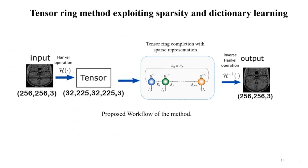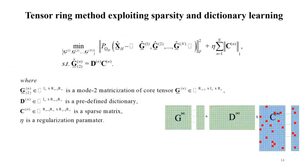In summary, for the tensor ring method exploiting sparsity: we take an input tensor with some parts missing, hankelization folds it into a higher-order tensor, then we perform tensor ring completion with sparse representation where the core tensors are initialized with a tensor ring decomposition. These core tensors are then updated using a dictionary learning approach. Finally, we perform inverse Hankel operation to generate the output.